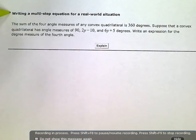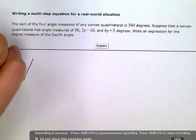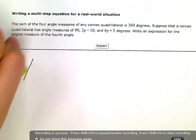Writing a multi-step equation for a real-world situation. The sum of the four angle measures of any convex quadrilateral. So a convex quadrilateral is just a regular quadrilateral like you're used to seeing.